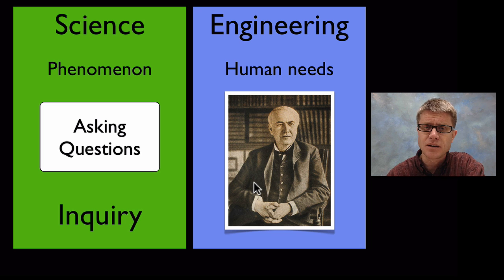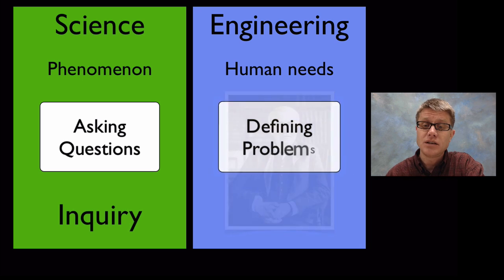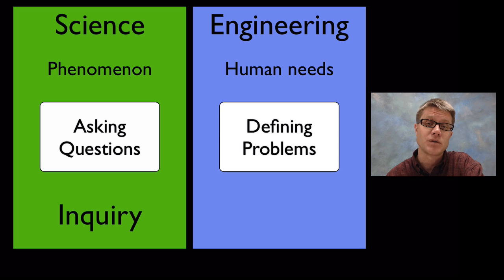Well this here is Thomas Edison. And he was somewhat scientific but he was more of an inventor. He was more of an engineer. And that's because he was fulfilling human needs. He started by defining problems that we have. What was a simple problem? Well if it was dark out you couldn't do work inside. And he invented the light bulb. And so the first step in engineering is defining a problem.